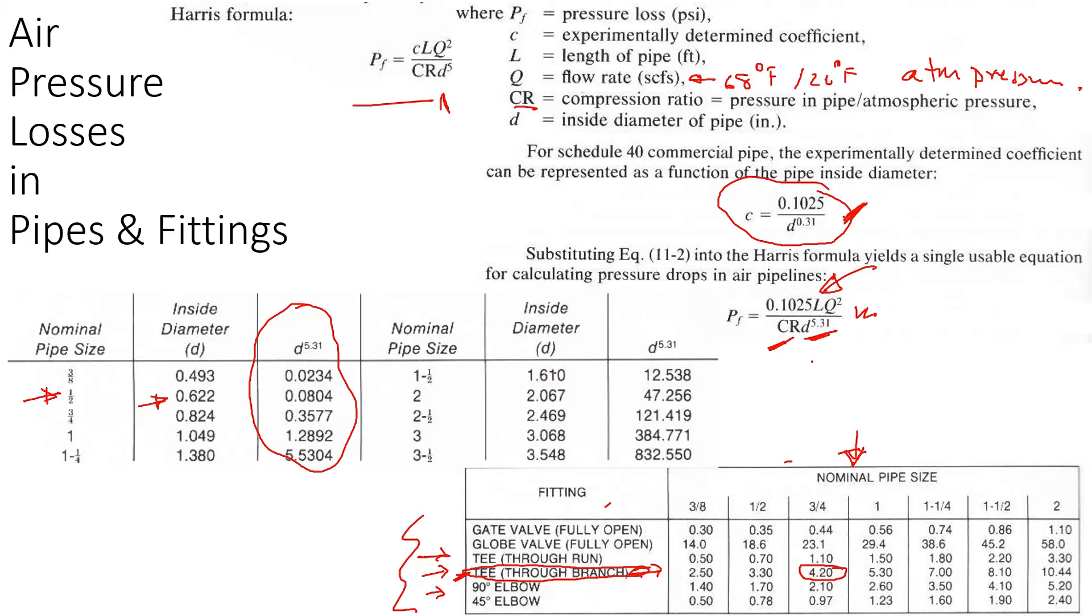The compression ratio is the pressure divided by the atmospheric pressure. In the English system you do psi absolute divided by 14.7 psi absolute atmospheric pressure. So let's say a compressor is running at 120 psi. That's 120 psi gauge plus 14.7 divided by 14.7, which gives the compression ratio.